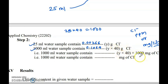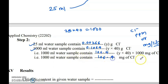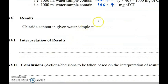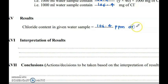Multiplying 0.1064 by 1000 gives 106.4 mg per litre. So 1000 ml of water sample contains 106.4 ppm of chloride. The result is: the given water sample contains 106.4 ppm or 106.4 mg per litre of chloride.